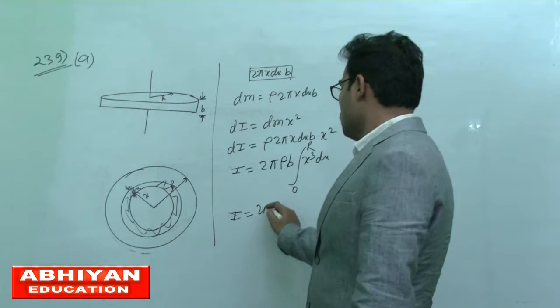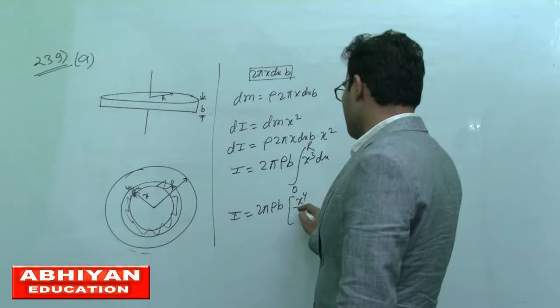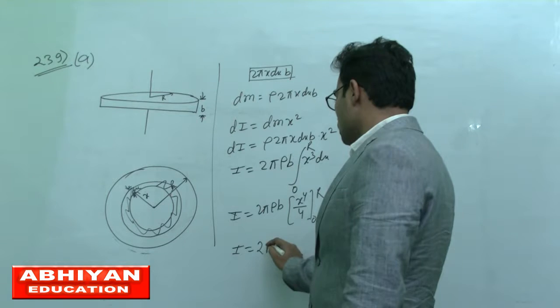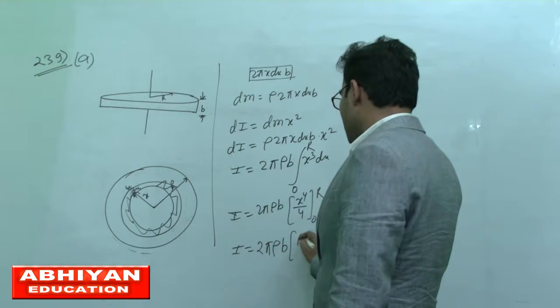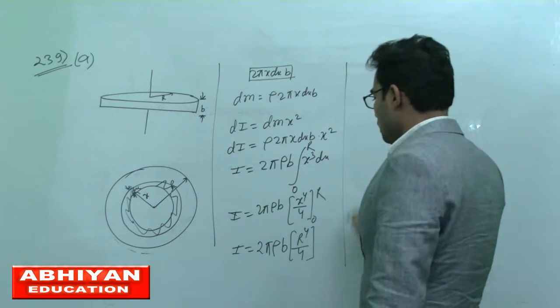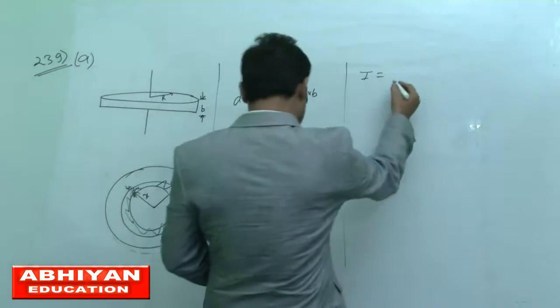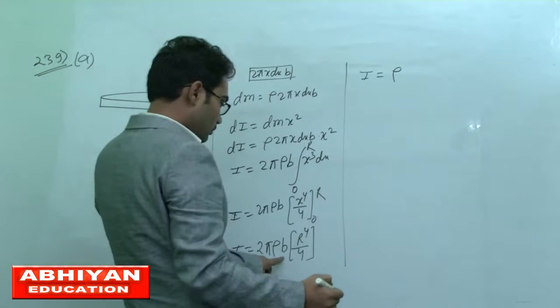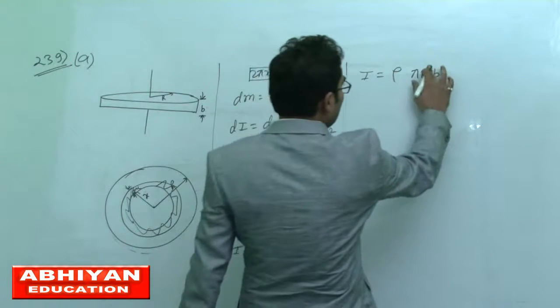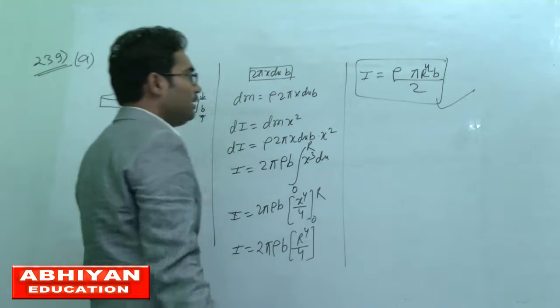Then I equals 2 pi rho b and integration of x cube is x to the power 4 by 4, from 0 to R. Then I equals 2 pi rho b R to the power 4 by 4, so moment of inertia equals rho pi R square b into R square, which is pi R to the power 4 by 2. This is the moment of inertia of the disc.